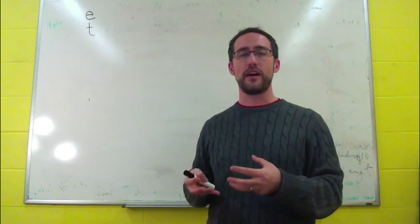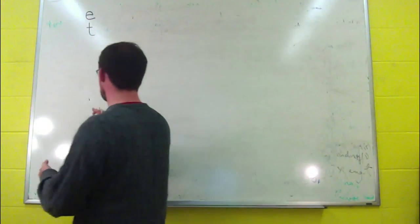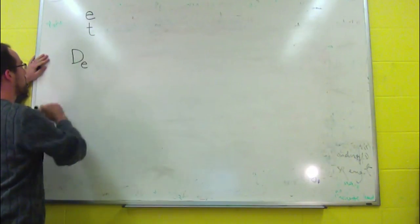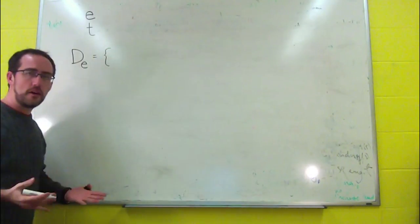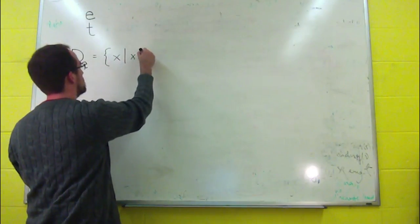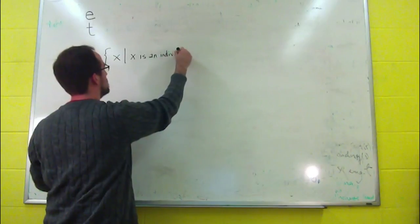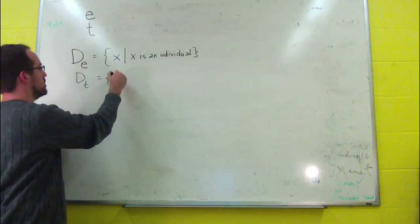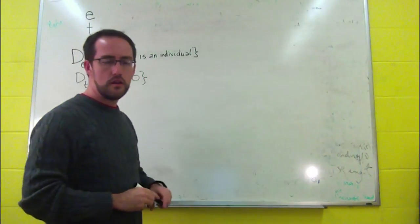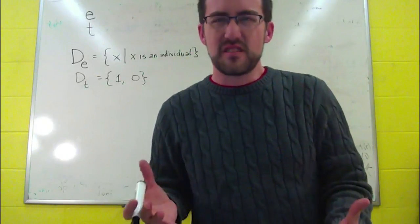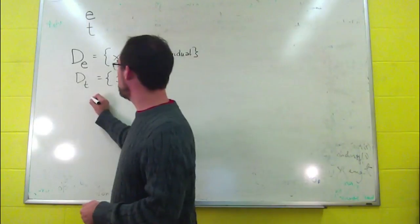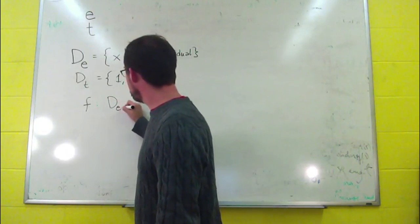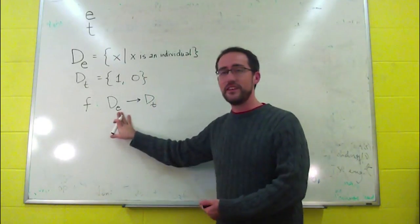For each type, we can define a set of objects of that type. We can do that using the domain function, essentially. So what we say is that D sub E is the set of all individuals. And we say that D sub T is the set of all truth values, and those are essentially 1 and 0. So now we can describe our functions in these terms. Earlier we had a function from the set of individuals to the set {1, 0}. Well, now we can define it more clearly: from the set of entities to the set of truth values.